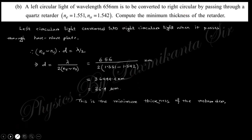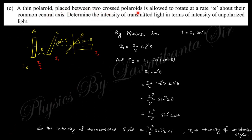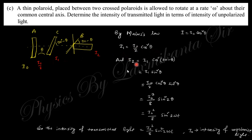The next question says: a thin polaroid is placed between two cross polaroids and allowed to rotate at angular rate omega about their common central axis — determine the intensity of transmitted light in terms of the intensity of unpolarized light. Using Malus's law: after the first polaroid, intensity becomes I0/2; after the rotating polaroid at angle theta it becomes (I0/2)cos²(theta); after the final polaroid at angle (90 - theta) it becomes I2 = I1·cos²(90 - theta). Finally, I2 = (I0/4)sin²(2theta), and since theta equals omega·t, we get I2 = (I0/4)sin²(2omega·t).